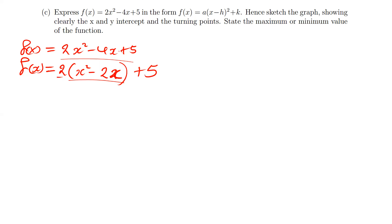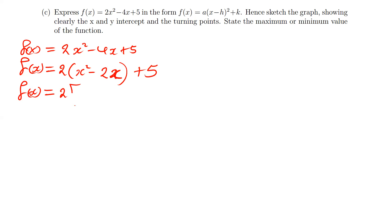Any step we take should allow us to get back to the original equation when simplified. Our next step is to find half of the middle term coefficient. Half of negative 2 is negative 1. We write x² and then add and subtract (−1)² inside the square brackets: f(x) = 2[x² − 2x + (−1)² − (−1)²] + 5.